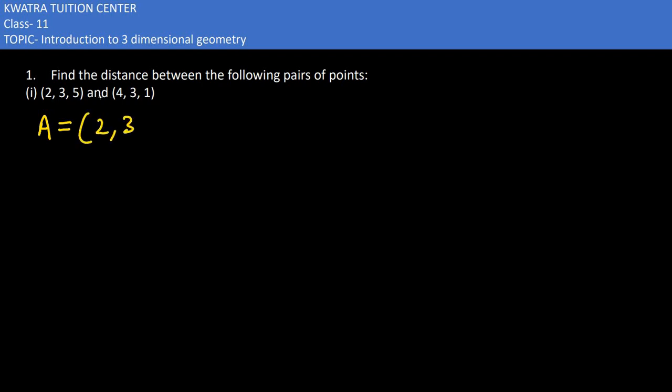A is (2,3,5) and B would be (4,3,1). So if we find out the distance between these two,